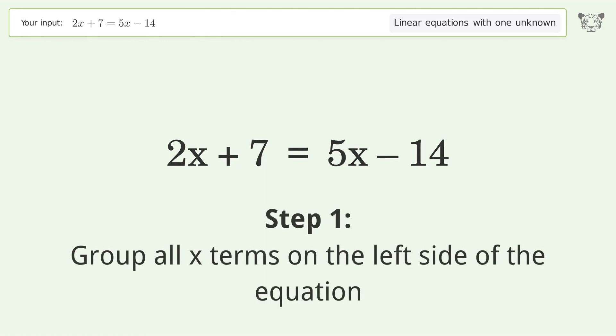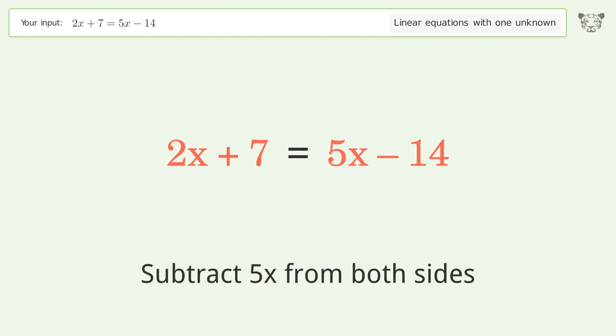Group all x terms on the left side of the equation. Subtract 5x from both sides.